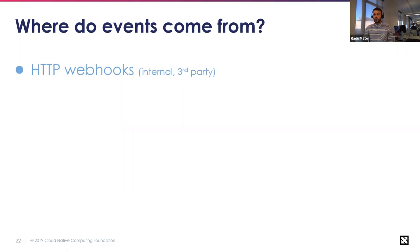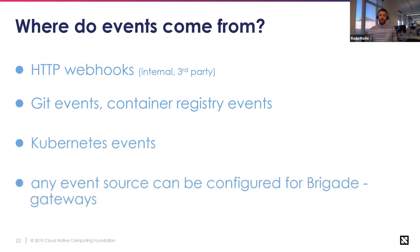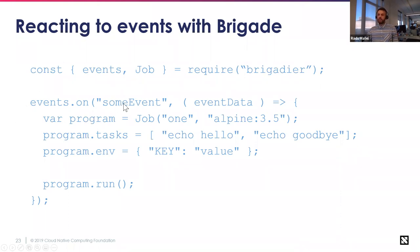We live in a world where every system can trigger events via webhooks or message queues, so it made sense to execute in response to outside events. Events can come from any HTTP webhook — internal systems, third-party sources like GitHub, Container Registries, Trello, or Kubernetes itself. Any event source can be configured for Brigade through a component called Gateway. Here is a complete Brigade script: you import the Brigade package in JavaScript, react to an event called 'some event', start a job, add tasks, and run it. This is the most simple task you can execute with Brigade.